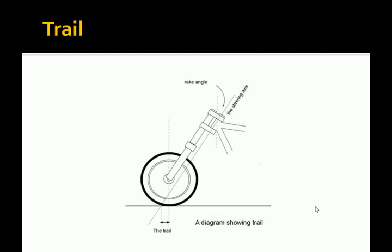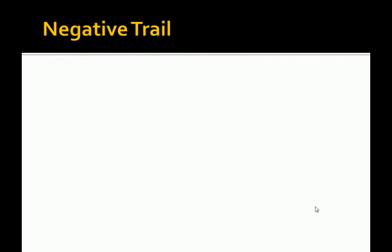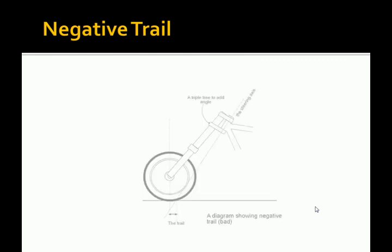It is possible to end up with negative trail where the wheel axis is behind the steering axis, if you use some kind of extension at the bottom of the neck to force out the forks without doing any frame alterations. Triple trees that do this are available. Everyone agrees that this is dangerous, however, since the machine may handle in unpredictable ways at speed and on corners, which is never a good idea.